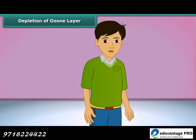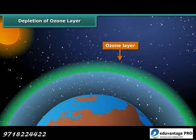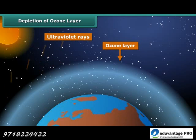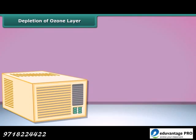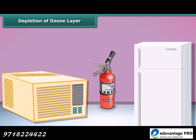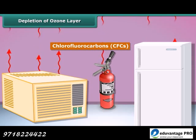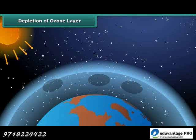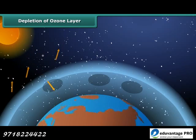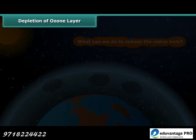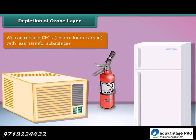Let us learn about the ozone layer. It is a layer of ozone gas in the upper atmosphere of Earth. It protects us from harmful ultraviolet rays of the sun. Things like air conditioners, refrigerators, and fire extinguishers release chlorofluorocarbons, CFCs, into the atmosphere and create holes in the ozone layer. CFCs are another type of air pollutant. We can replace CFCs with less harmful substances to save the ozone layer from depletion.